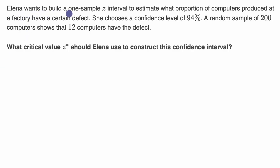Elena wants to build a one-sample z interval to estimate what proportion of computers produced at a factory have a certain defect. She chooses a confidence level of 94%. A random sample of 200 computers shows that 12 computers have the defect.